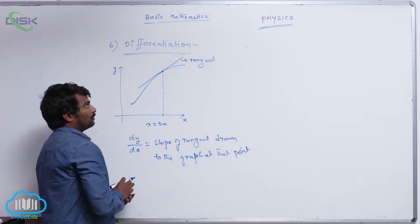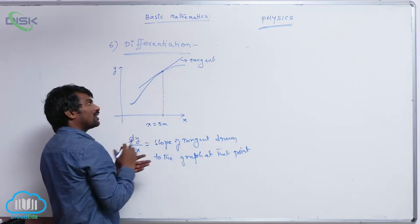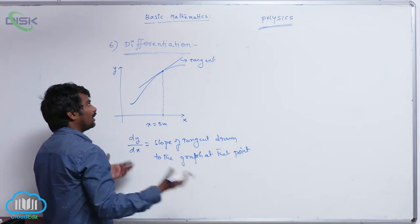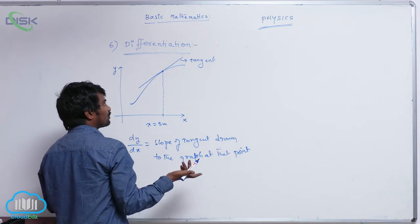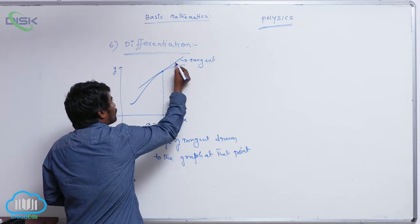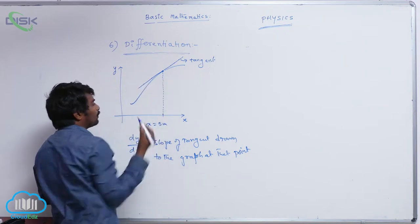Already I told you to calculate the slope of this tangent because it is a straight line. You can select any two points. Which points? Any two points? Because straight line slope does not change. You can select these two points or this point and this point or this point and this point or this point and this point.